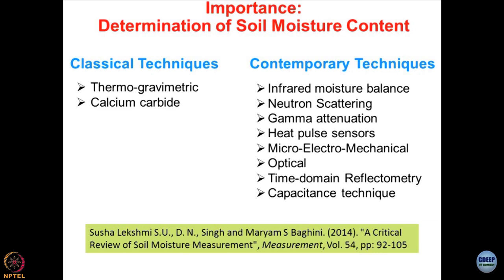When we talk about thermal characterization of the material, a heat pulse can be utilized to pass heat through geomaterials and that can be related to moisture content. Thermal conductivity, thermal resistivity, thermal diffusivity, and specific heat of geomaterials also indicate moisture content, though those are complicated processes. Micro-electromechanical devices — MEMS — are being developed where different types of MEMS-based sensors are used to obtain moisture content.